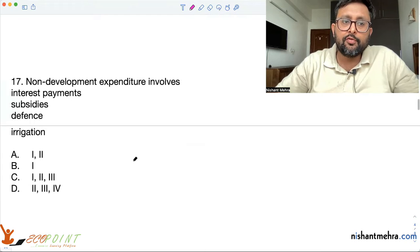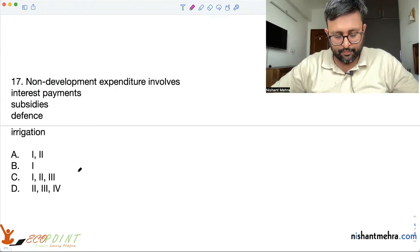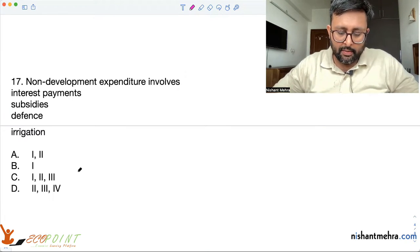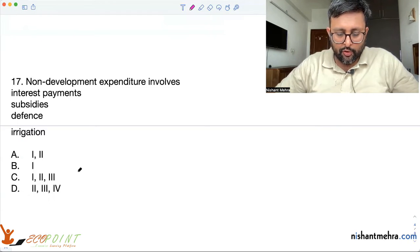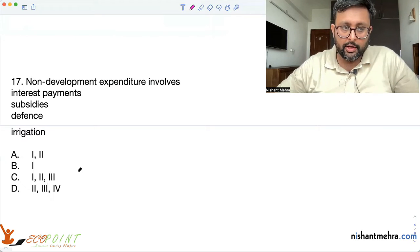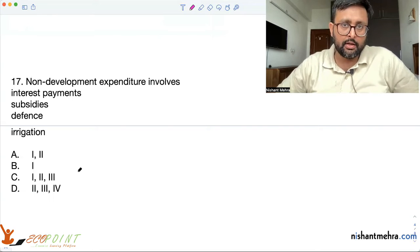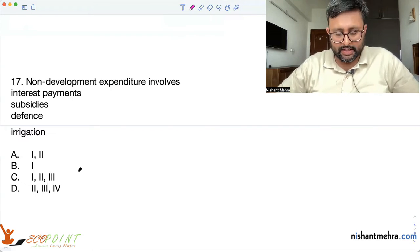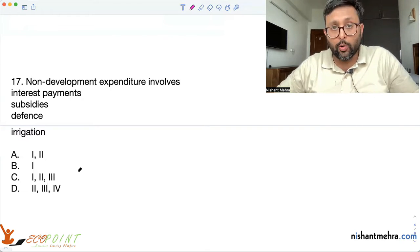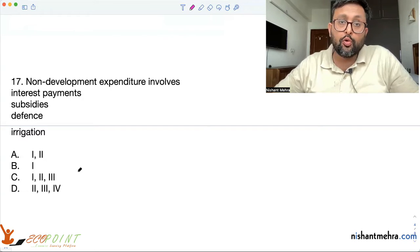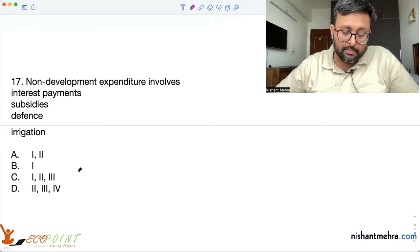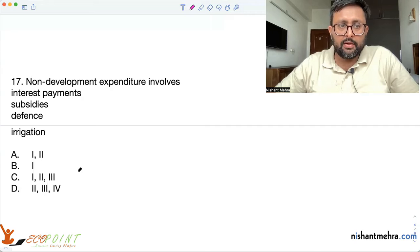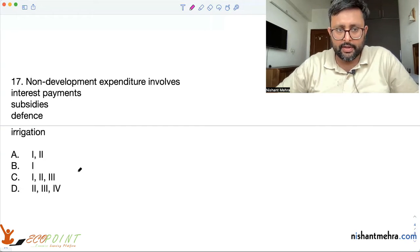Non-development expenditure involves interest payments, subsidies, defense, and irrigation. Non-development expenditure means expenditure which is not helping in the development of the country. For example, to collect taxes you need to spend money — people collecting taxes, systems for auditing, people auditing governmental accounts, printing of notes, internal law and order, and defense. Interest payments, subsidies, and defense are non-developmental expenditures, so C is the right answer.